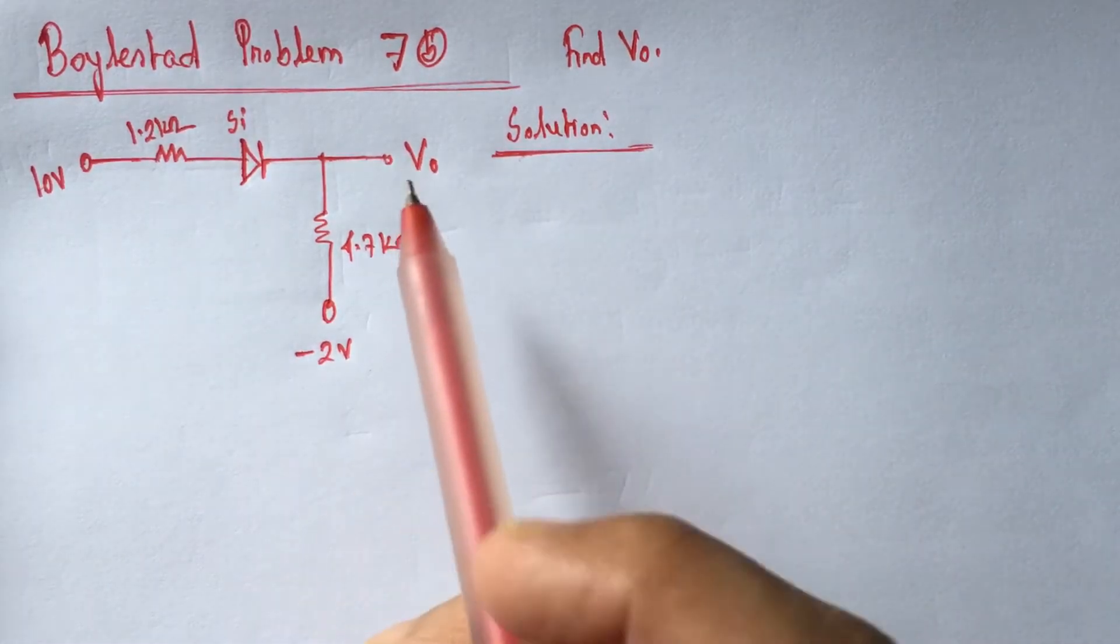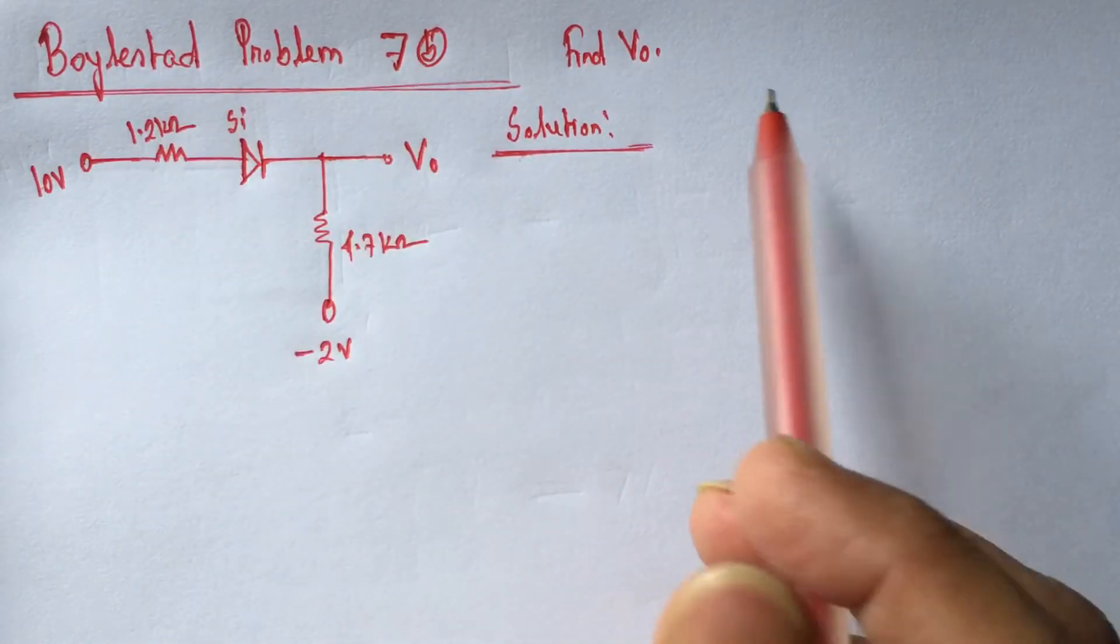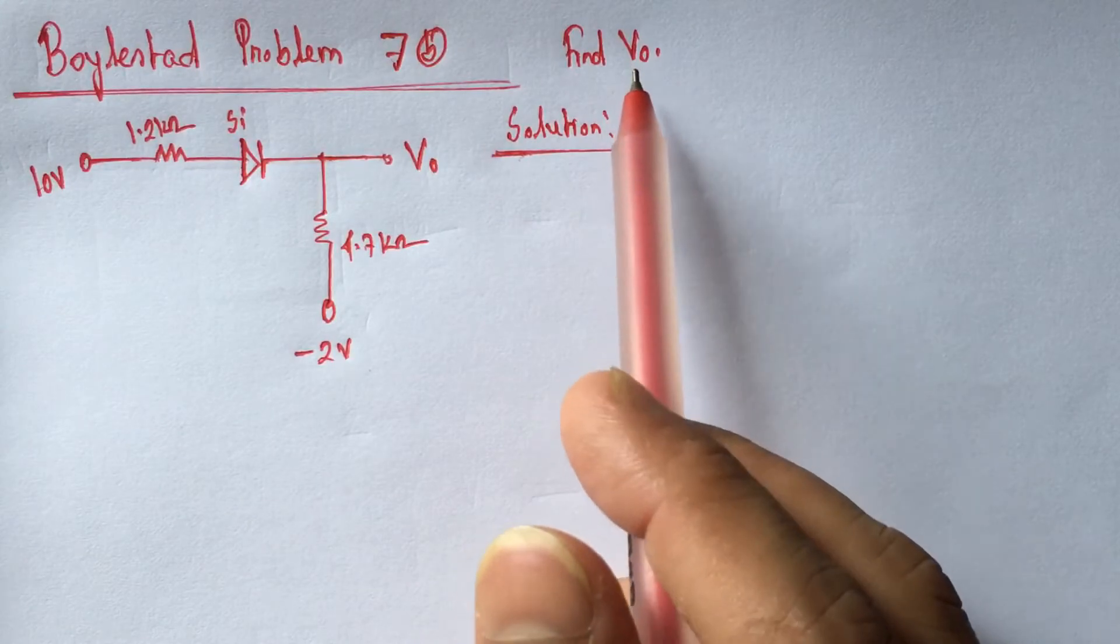Hi viewers, today we will solve problem 7B from Boylstad. Here we have to identify the voltage V0.